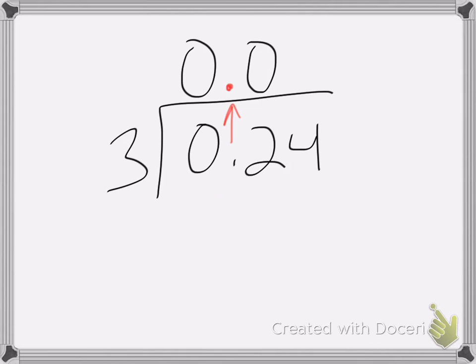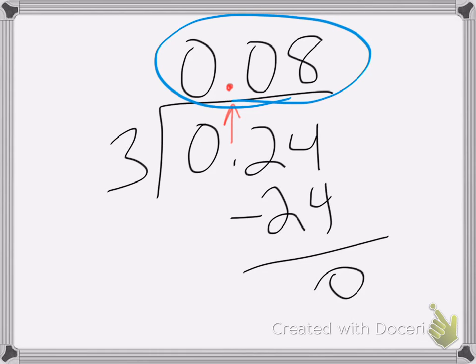That's 24. We subtract and get 0, so my answer is 0.08. Make sure to put in these zeros. Because if you don't, you won't get the correct answer. You have to keep the place value correct.